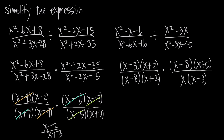Now we look within our fractions and can cancel (x plus 2) with (x plus 2). We can't cancel anything within the second fraction. But looking across the fractions, we can cancel (x minus 3) with (x minus 3), and (x minus 8) with (x minus 8). So the entire first fraction has been canceled — essentially leaving 1 — times whatever's left in the second fraction. Our final answer is x plus 5 divided by x.